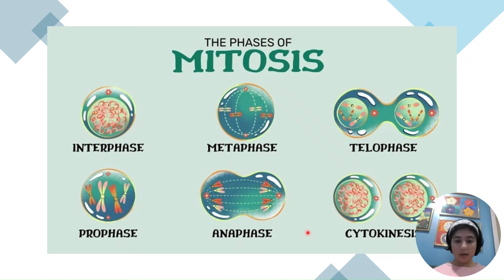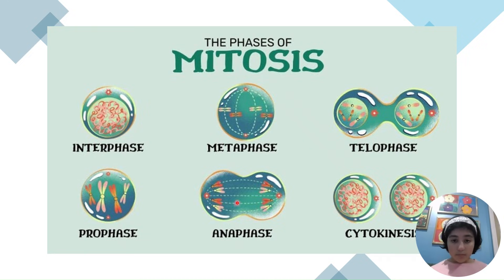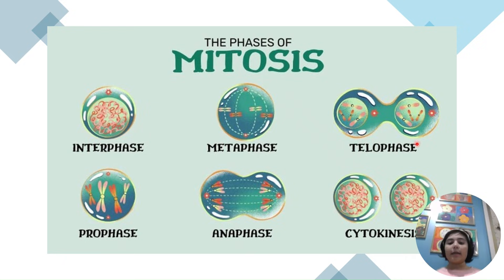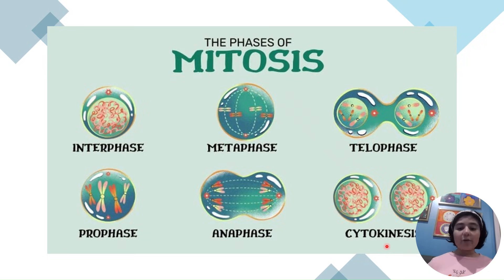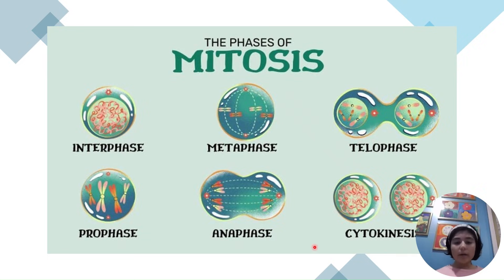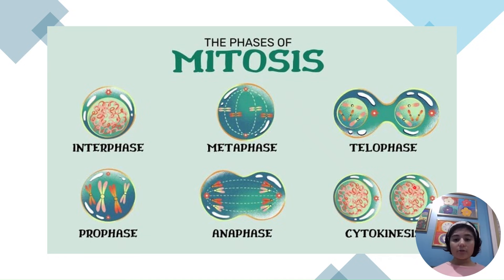In telophase, the cells start to form their own nuclei. Then cytokinesis occurs, which is the process where the cytoplasm of the cell splits apart and two new cells are formed.